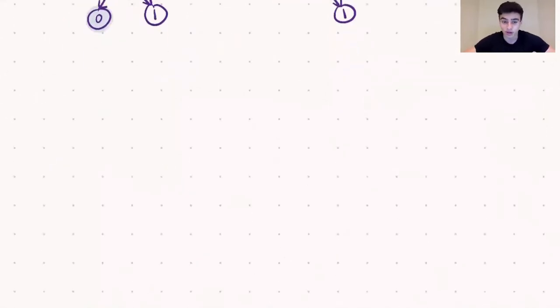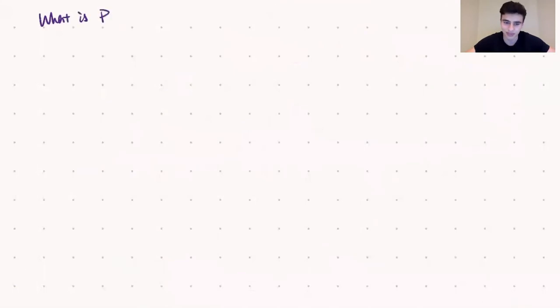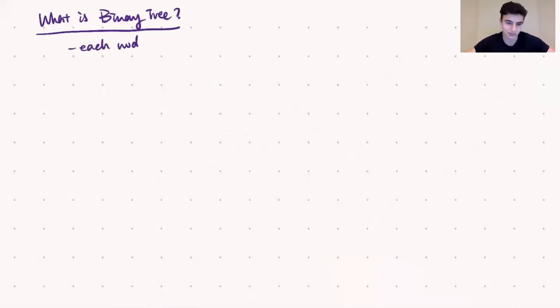First we need to recall what a binary tree is. A binary tree is a tree data structure such that each node has at most two children, and that's the only prerequisite we need to solve this problem. So let's get into the intuition.